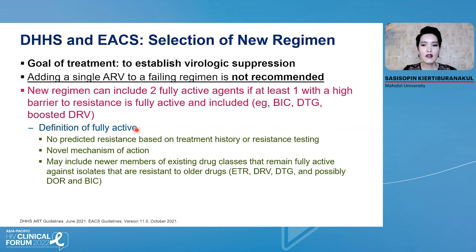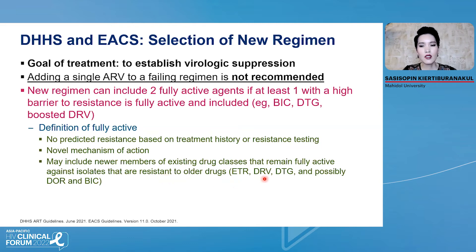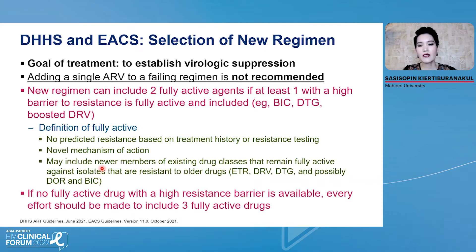The definition of 'fully active' includes: first, no predicted resistance based on treatment history or resistance testing; second, novel mechanism of action; and third, newer members of existing drug classes that remain fully active against isolates that are resistant to older members — such as bictegravir, dolutegravir, and etravirine. However, if no fully active drug with a high resistance barrier is available, sometimes we need at least three fully active drugs.